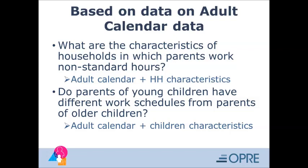Based on the data from the adult calendar, you could ask: what are the characteristics of households in which parents work non-standard hours? For this question, you would combine adult calendar data with data from the household data file. Another question you could ask is: do parents of young children have different work schedules from parents of older children? Here you would combine data from the adult calendar with data on children's characteristics. In both questions, the issue is not just the number of hours that parents work, but the timing of work — when does that work take place?